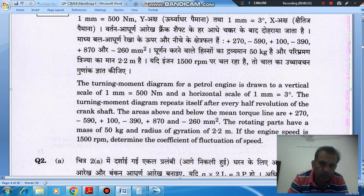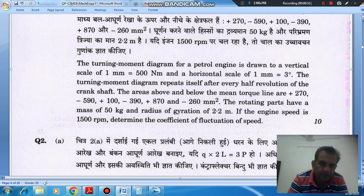The areas above and below the mean torque line are plus 270, minus 590, plus 100, minus 390, plus 870, and minus 260 mm squared. The rotating parts have a mass of 50 kg and radius of gyration 2.2 m. If the engine speed is 1500 rpm, determine the coefficient of fluctuation of speed.